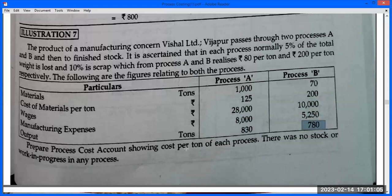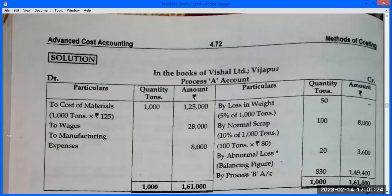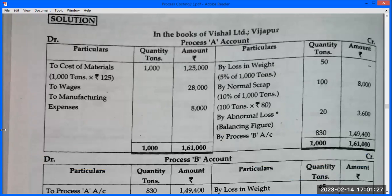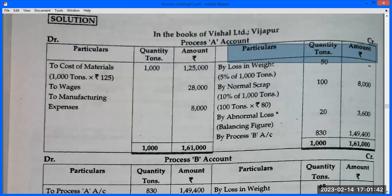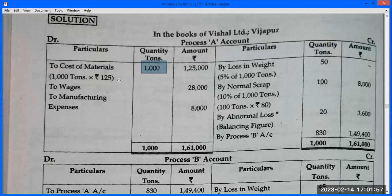There was no stock of work-in-progress in any process. No unfinished material — all converted to finished stock. Now prepare Process A Account in the books of Vishal Limited, Vijapur. Draw the columns: Particulars, Quantity (in tons), Amount. On the debit side, start from Cost of Material: 1000 tons multiplied by ₹155 per ton.